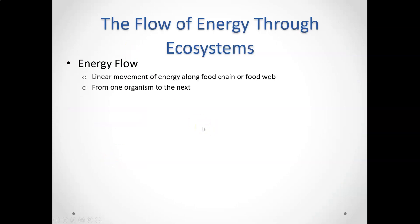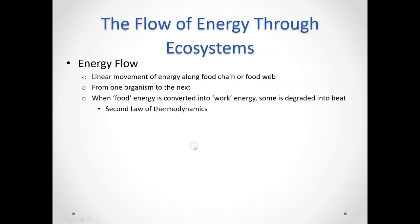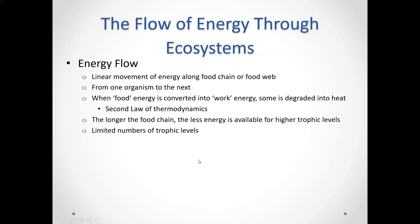To review: energy flows through an ecosystem in a linear path along a food chain or food web, from one organism to the next. When food is converted into work energy, some gets lost and degraded into heat. The longer the food chain, the less energy is available for the higher trophic levels. You get the most energy from the sun, and there's less and less energy available at higher and higher trophic levels. There are the most plants because there's so much energy from the sun.